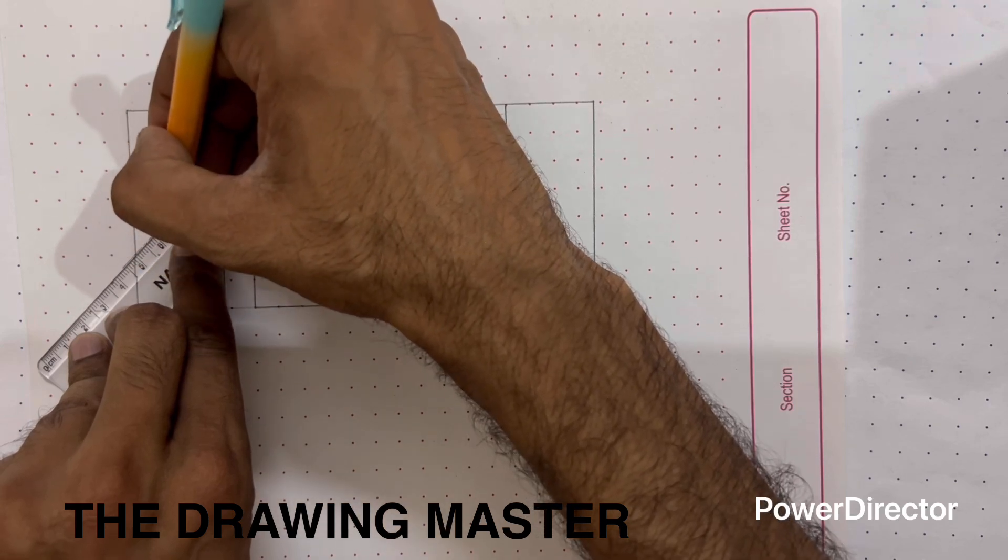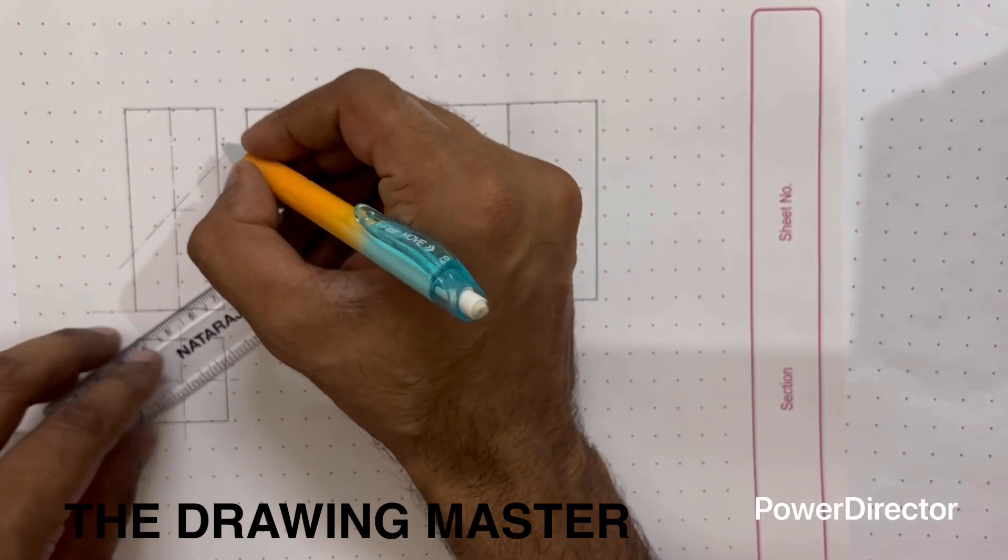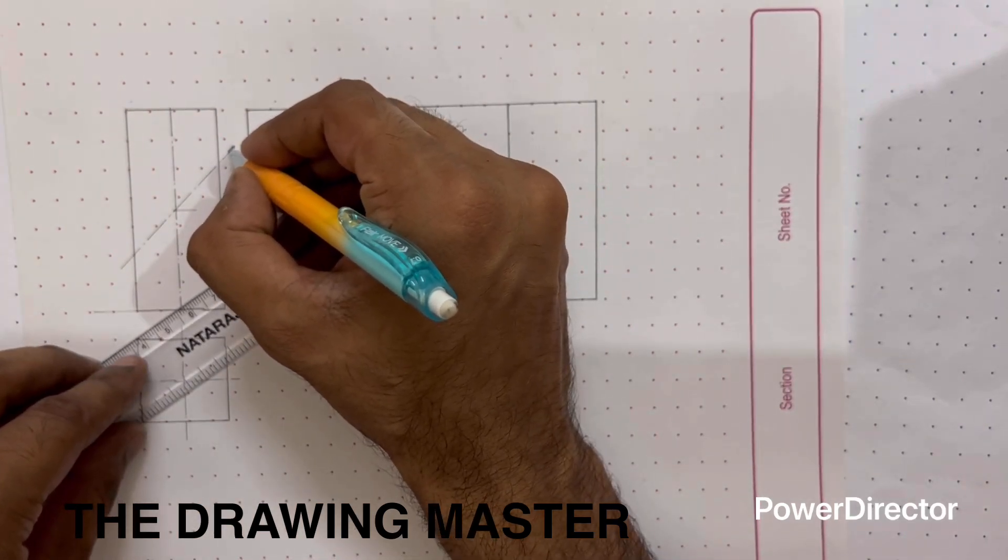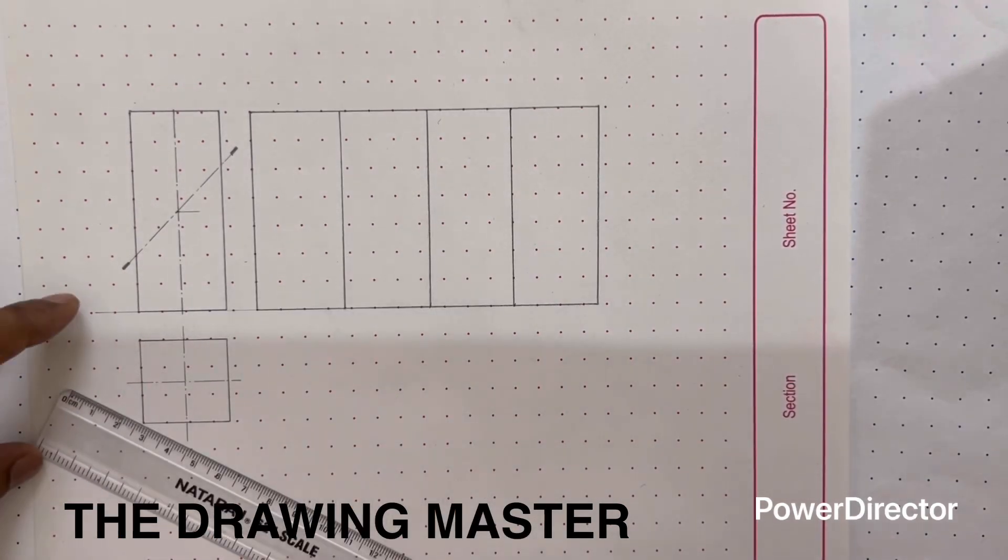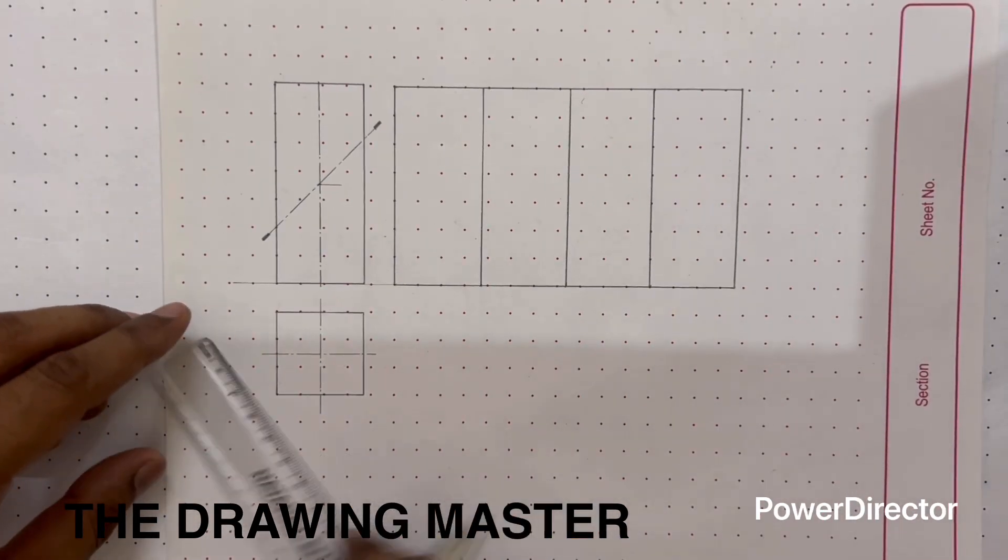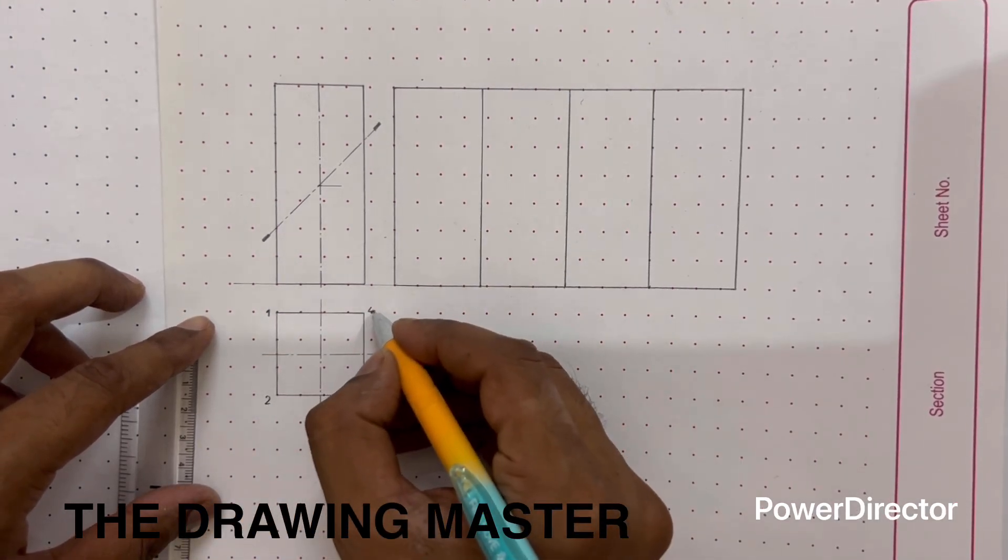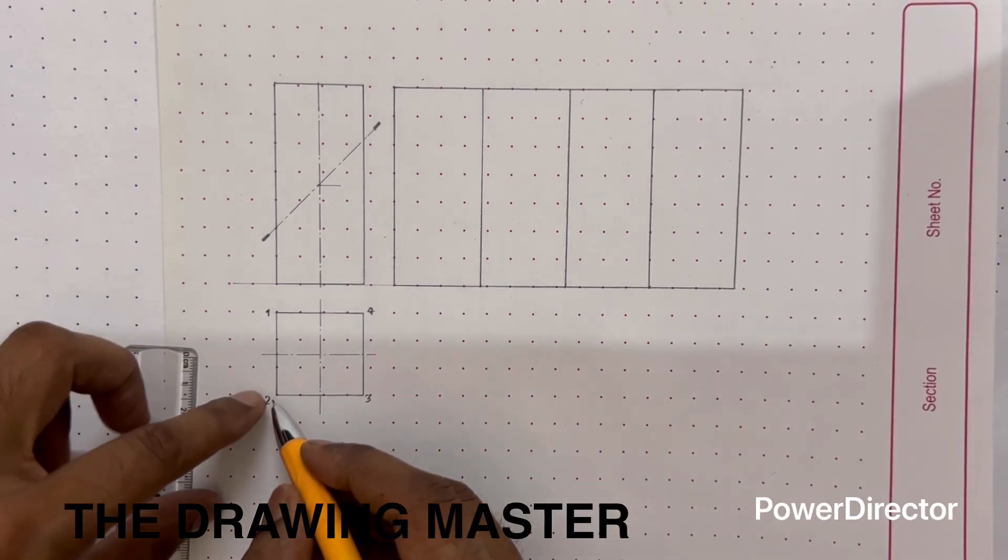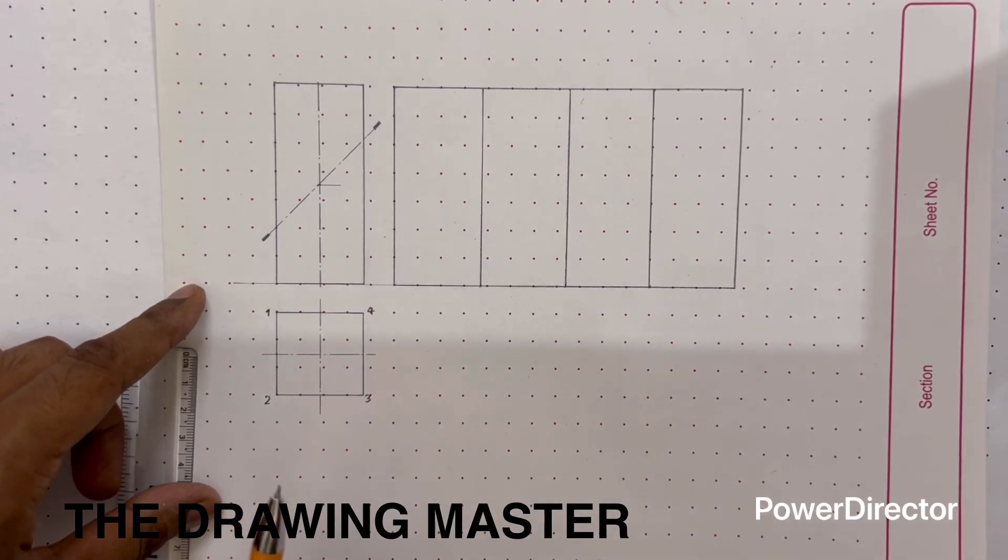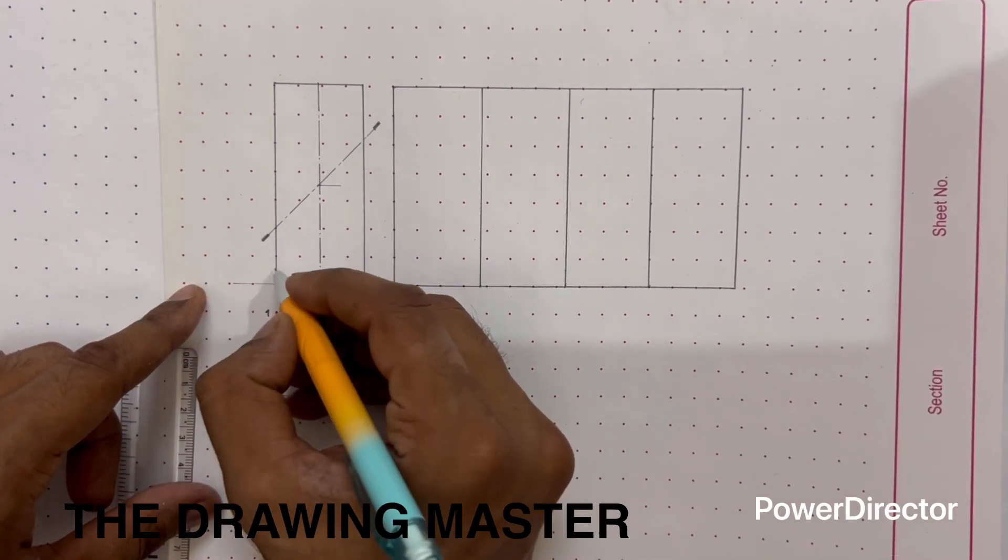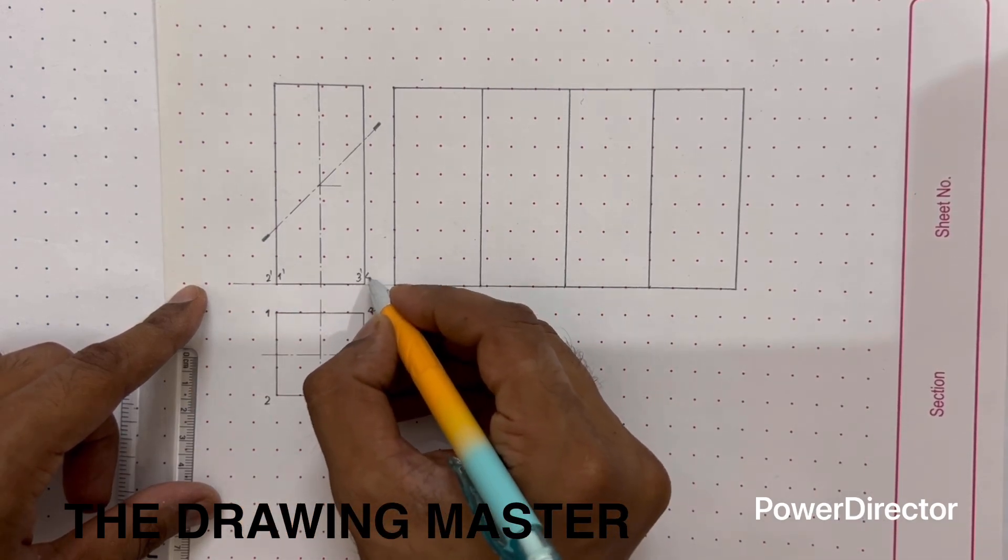This is chain line with thick end because cutting plane line is represented by chain line with thick end. Now let's do the labeling. This is 1, 2, 3, 4. You can start it from here also 1, 2, 3, 4, it's your call. So in the front view, first we will see this vertex 2, so here we can write 2 dash, 1 dash, 3 dash, 4 dash.